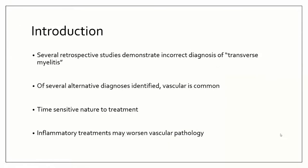This introduction is really kind of unusual. You guys have heard many times about transverse myelitis. If you look at the data, transverse myelitis diagnoses are often questioned, especially those that don't improve. Many of them are actually incorrectly diagnosed. This can be reported anywhere between 15 up to 40 or 50%. So keep an eye out when you see transverse myelitis. Many alternative diagnoses are identified, and vascular etiologies are very common.